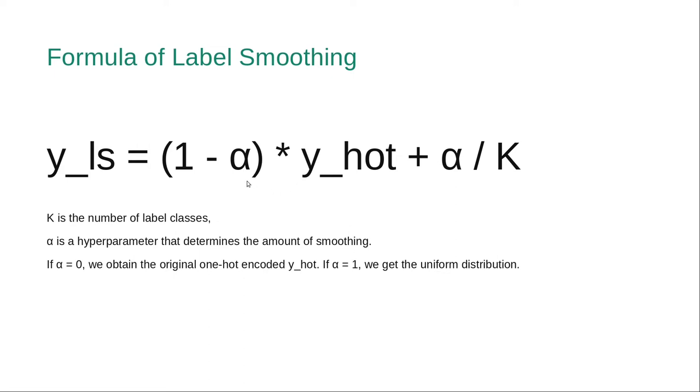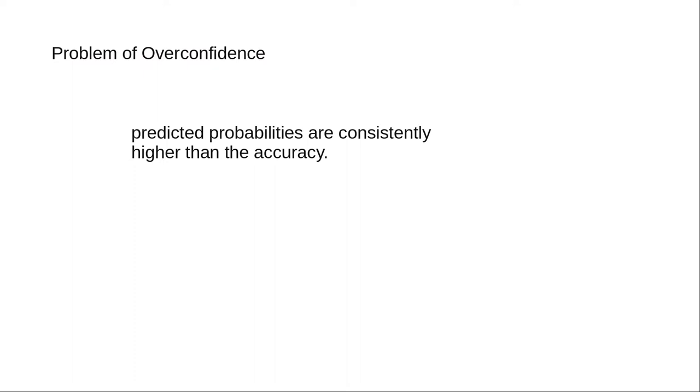Now the problem of overconfidence that label smoothing tries to solve is that an overconfident model is not calibrated and its predicted probabilities are consistently higher than the accuracy. For example, it may predict 0.9 for inputs where the accuracy is only 0.6. Also note that models with small test errors can still be overconfident.